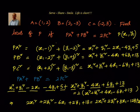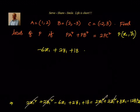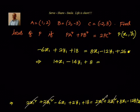Let us go to the next step. We can cancel 2x1 square from both sides and 2y1 square from both sides. Now on the left hand side we have minus 6x1 plus 2y1 plus 18, which equals the right hand side: 8x1 minus 12y1 plus 26. Moving everything to the right hand side, we get 8x1 plus 6x1 equals 14x1, minus 12y1 minus 2y1 equals minus 14y1, and 26 minus 18 is plus 8, giving 14x1 minus 14y1 plus 8 equals 0.